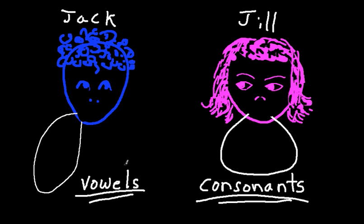Jack says vowels — A, U, E — and you say them after him. Now it's Jill's turn. Jill says some consonants — M, B, S, T — and you say them after her.